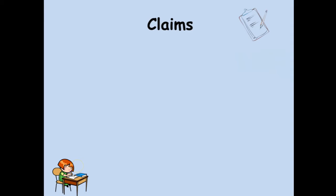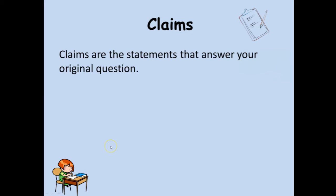So let's go through these parts. The first thing you're going to be writing is a Claim. A Claim is a statement that answers your original question. What's your original question? If we're talking about a scientific experiment designed to determine the identity of the metal, then the claim is: what's the metal? This metal is iron. This metal is silver. That's your claim.